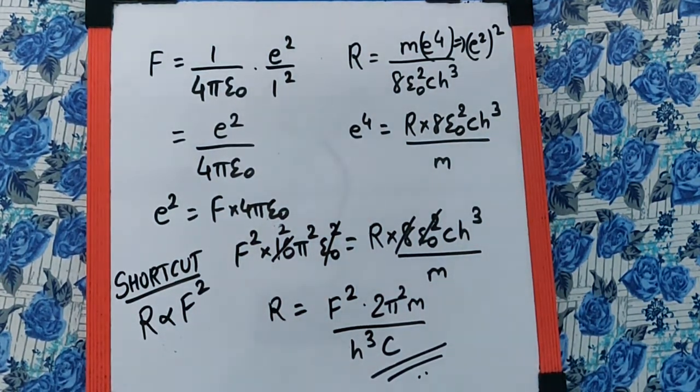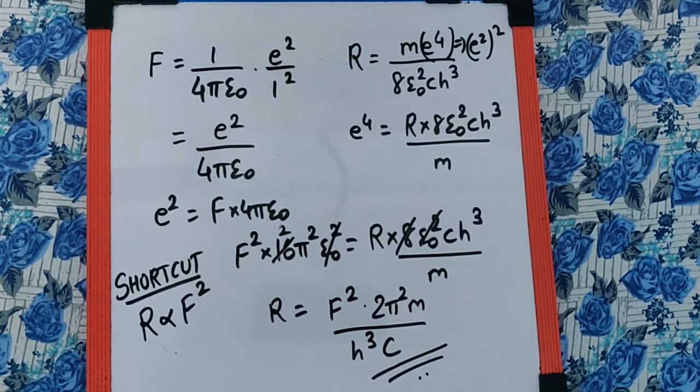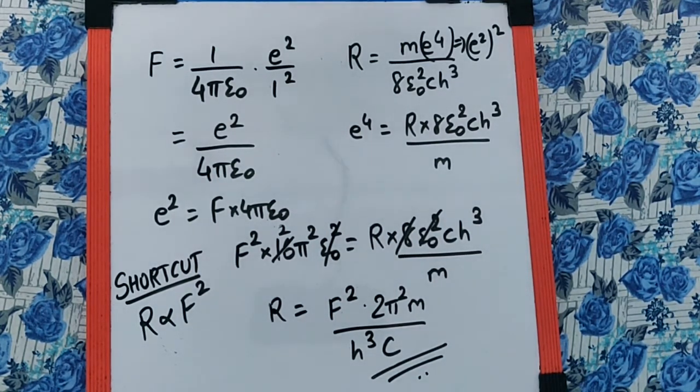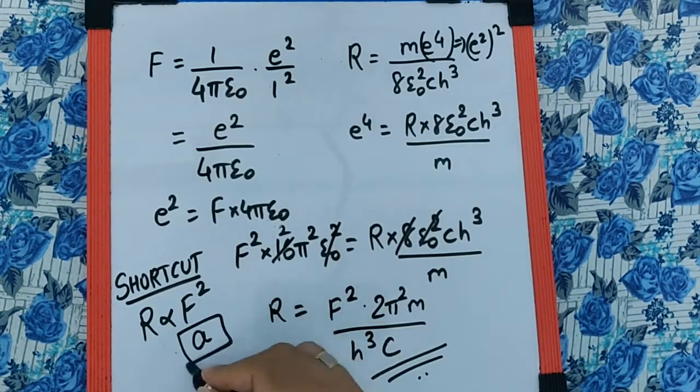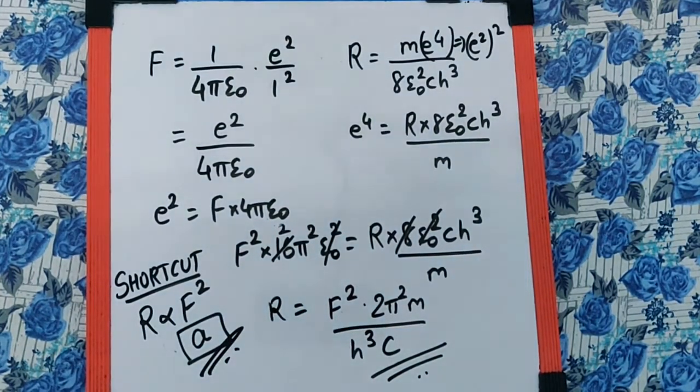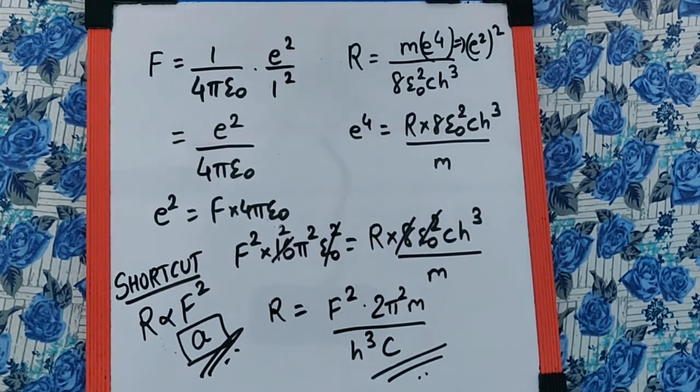Which means in the R formula option, F² should be in the numerator, which is in only one option, and that is option A. So this becomes a shortcut for this particular sum you can use.